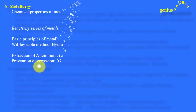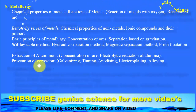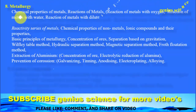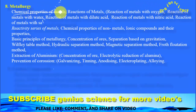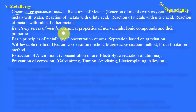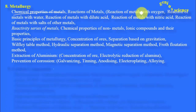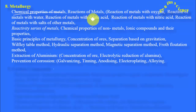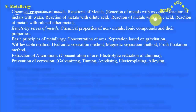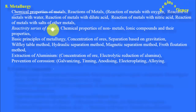The eighth chapter is Metallurgy. This is also an important chapter. We must learn chemical properties of metals, then reactions of metals — there are different types: reactions of metals with oxygen, reactions of metals with water, reactions of metals with dilute acid, reactions of metals with nitric acid, and reactions of metals with salts of other metals.